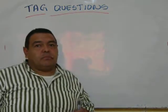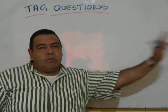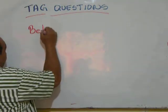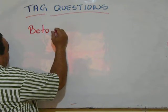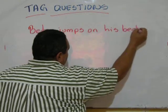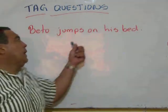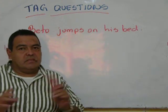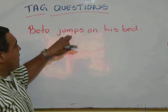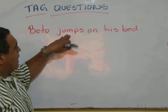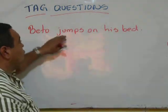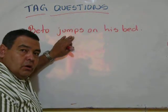Now let's continue with tag questions in the present simple, but the 'be' verb section is over. Let's go with the rest of the verbs. For example, 'John sleeps on his bed.' This is different — 'sleeps' is not a 'be' verb, it's an action verb. In this case, the tag question is going to be different.